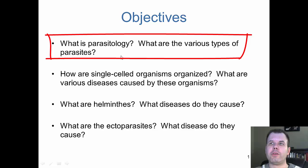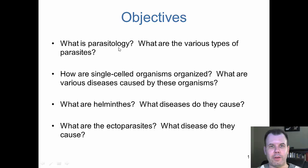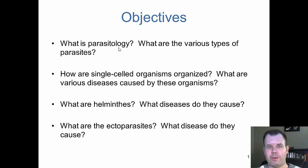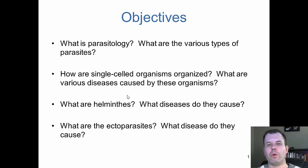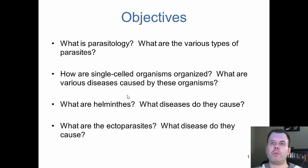The first thing we're going to talk about is parasitology and the various types of parasites. Parasitology is the study of parasites — animals or organisms living on or inside us that do us harm. They're not providing any benefit; they're actually trying to kill us. The first group is the single-cell protozoa, which we can break down by how they move: amoebas, those with flagella, and the Apicomplexa, which have multiple complex life cycles and are sometimes called spore formers.